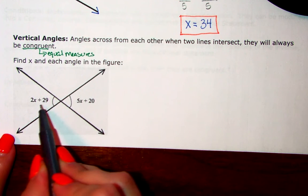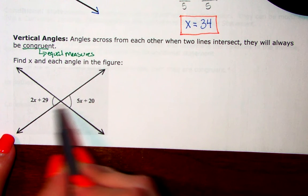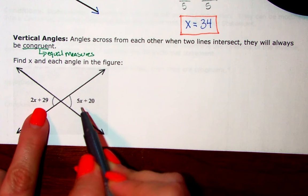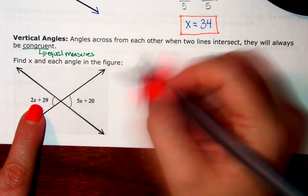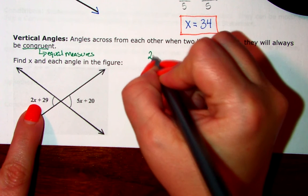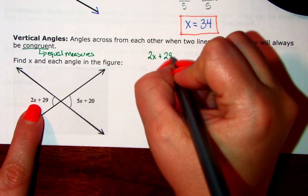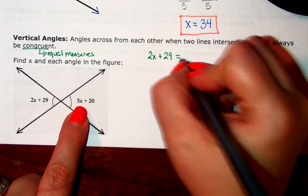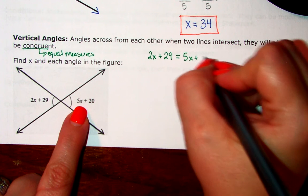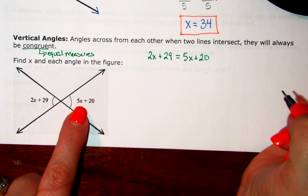Okay, so these two angles across from each other will have equal measures. So, we're going to say my 2x plus my 29 should equal my 5x plus 20.